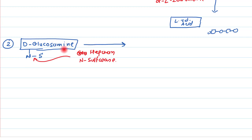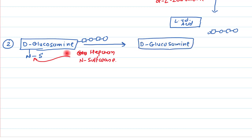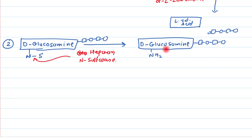After the sulfate is removed by heparan N-sulfatase, we are left with plain D-glucosamine still bound to the polymer. However, our body lacks a glucosaminidase enzyme, so D-glucosamine cannot be released directly and must undergo further processing.